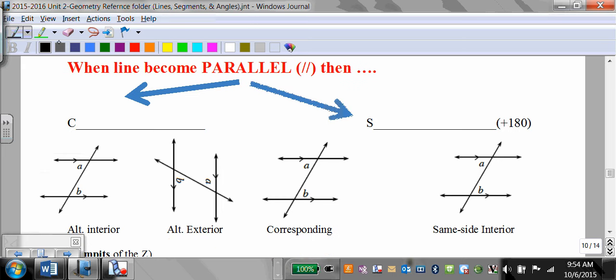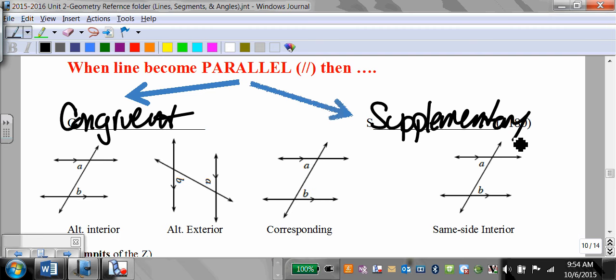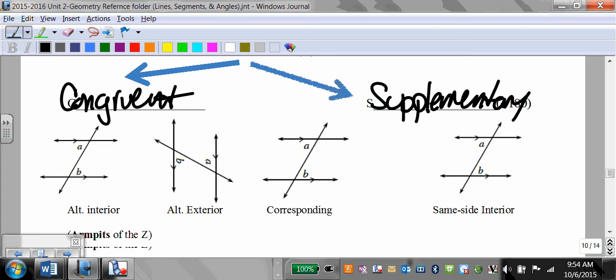When lines do become parallel, these three become congruent and this one becomes supplementary. Just ignore the A's and B's, just watch the colors. Alternate interior angles are always congruent when lines do become parallel. If you want, please, armpits of the Z. Those hairy armpits are congruent. Yes, hairy armpits, congruent. Yeah, totally gross. You'll never forget.